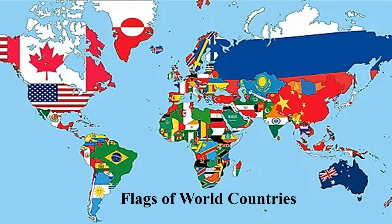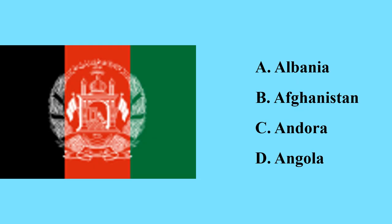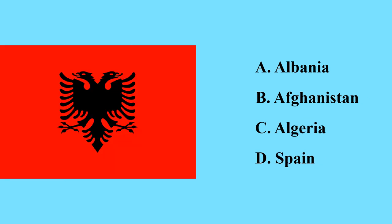There are about 195 independent sovereign states in the world, each with their own national flag. For example, this flag is the flag of Afghanistan — it is called the Afghan flag. Afghanistan is a country in southern Asia.